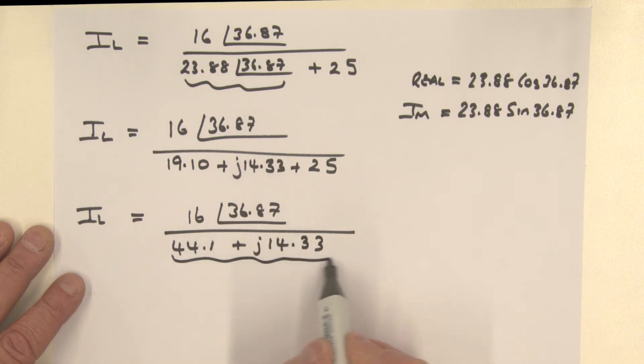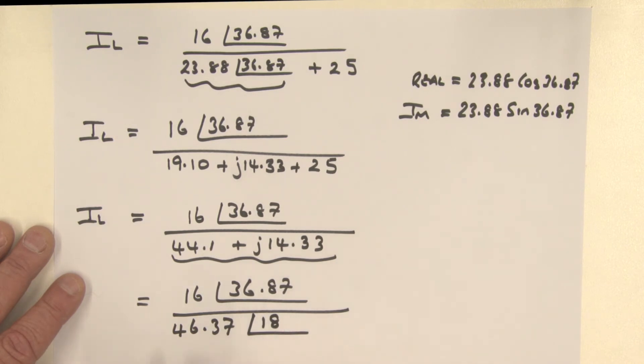The next step now is to convert this back into a polar form. So it's that bit squared plus that bit squared, square rooted gives us the magnitude, and then the angle is the inverse tangent of the imaginary component over the real component. So we get 16, our angle is 36.87, divided by the magnitude being 46.37 and the angle being 18 degrees. So finally, 16 divided by 46.37 gives us a current of 0.345 amps, and the angle, bringing this guy up to the numerator it changes its sign, so 36.87 minus 18 gives us an angle of 18.87, and that represents our load current.